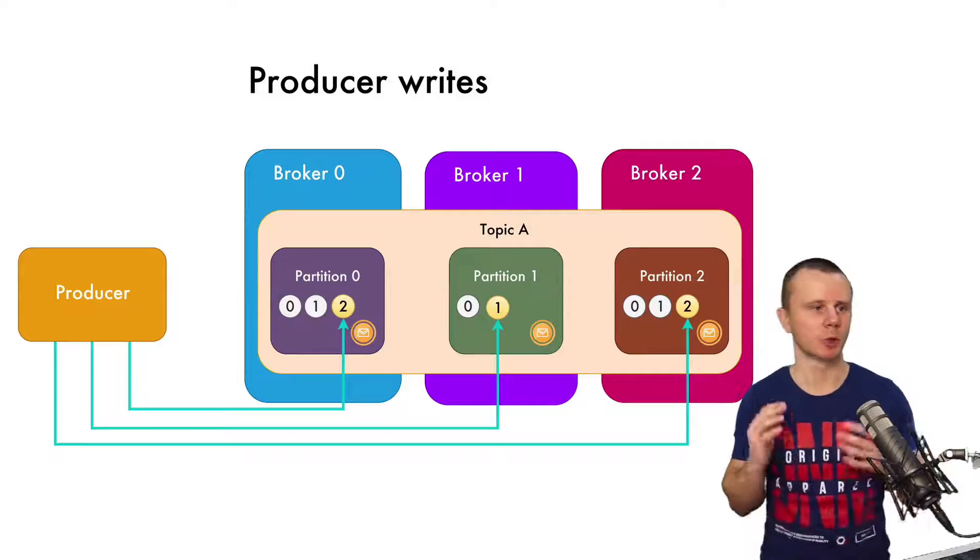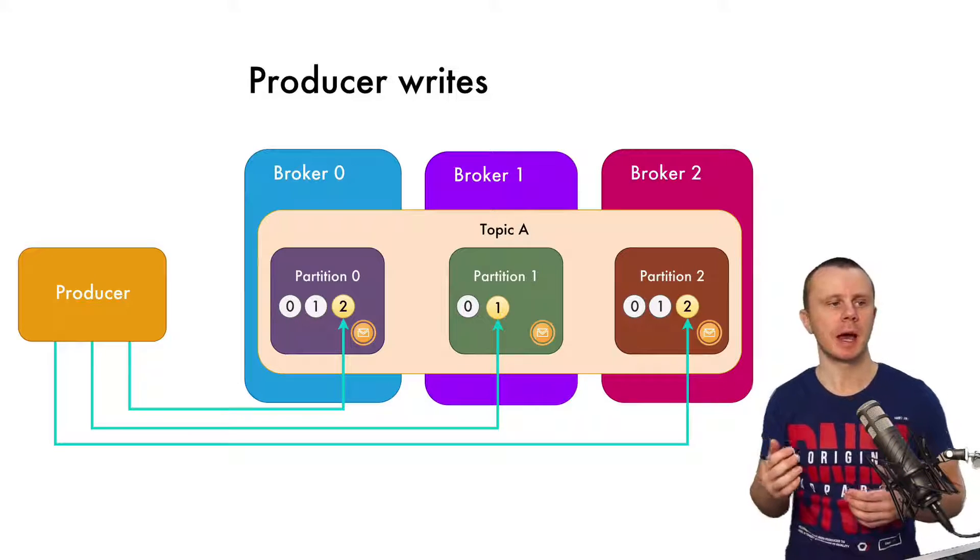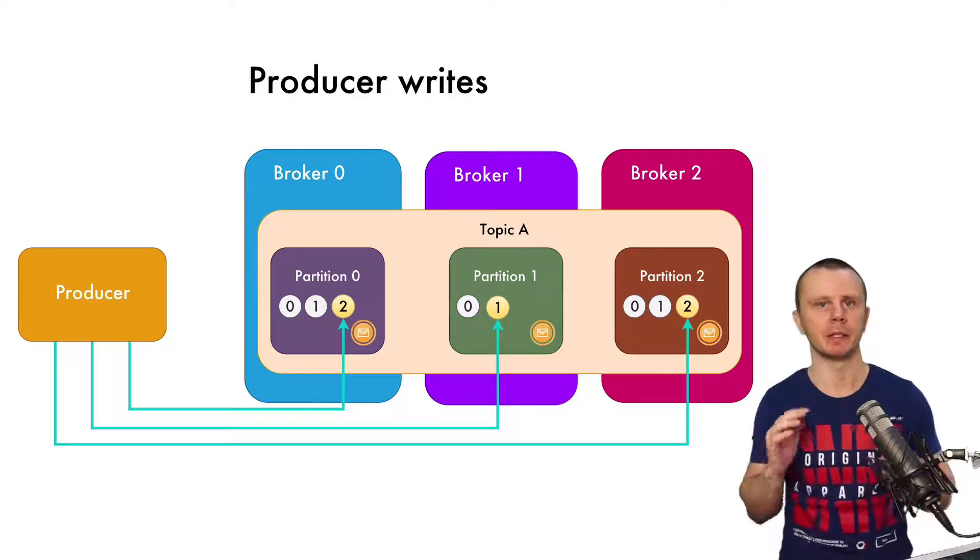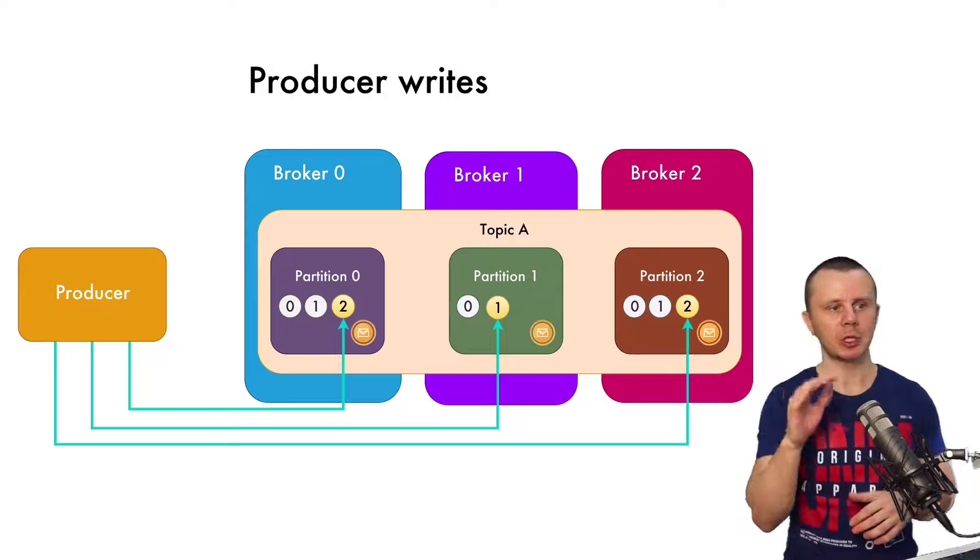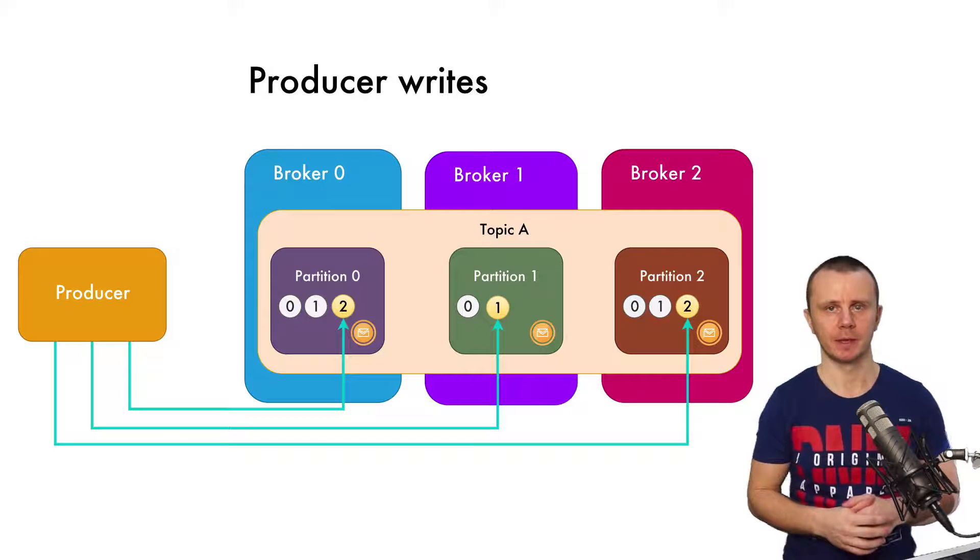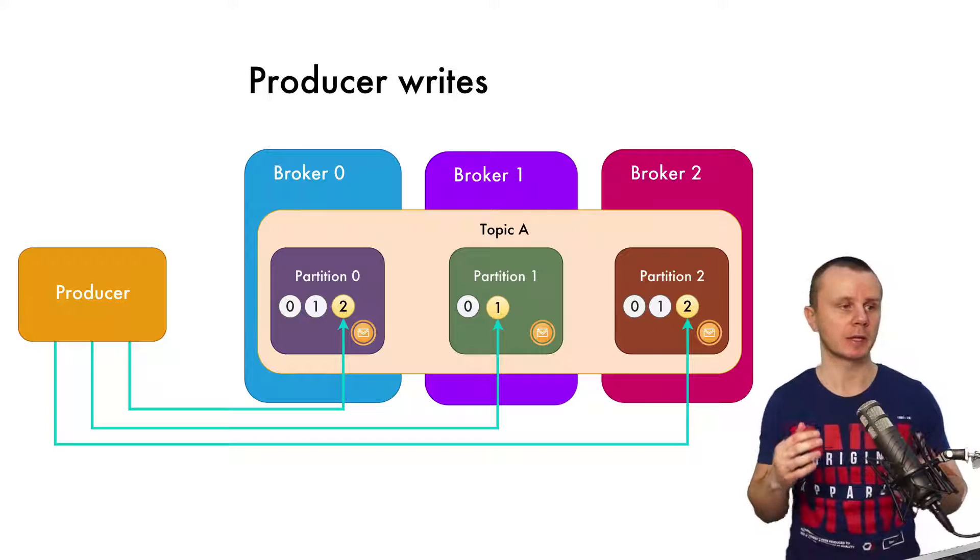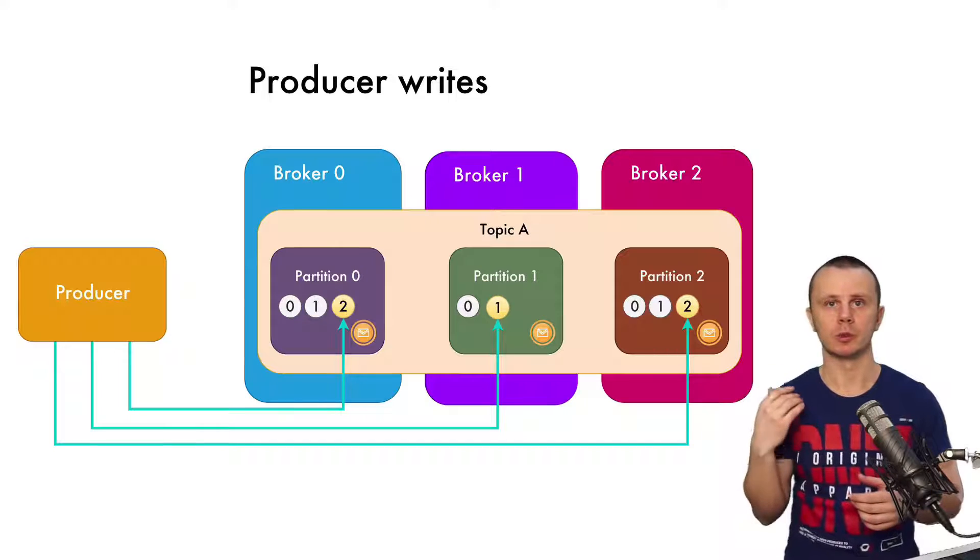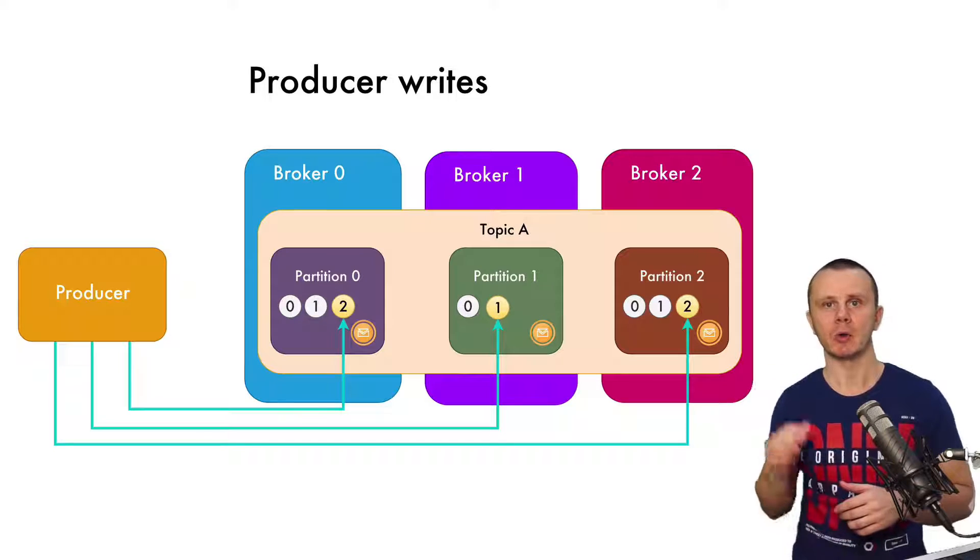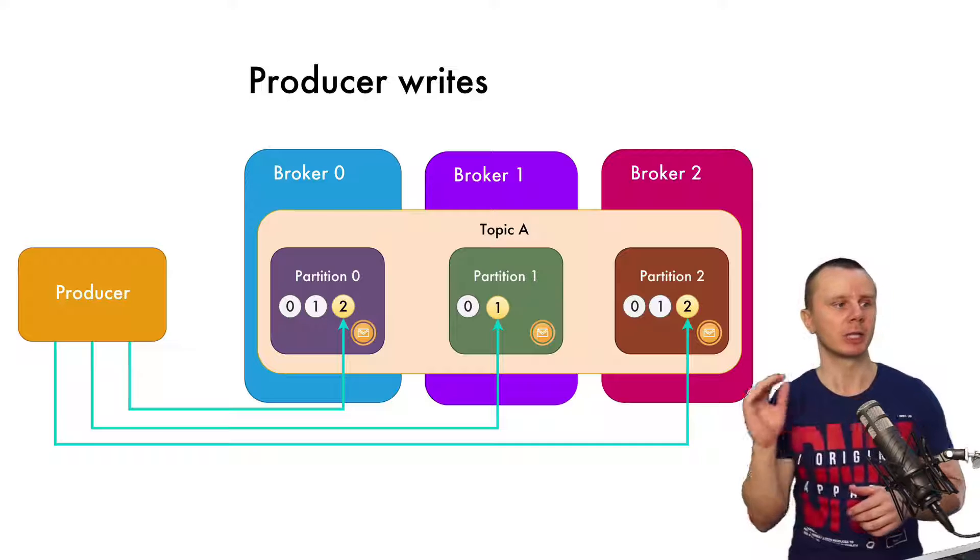Let's suppose that there is topic A with multiple partitions spread among different brokers, and every partition already has some messages. When a specific producer connects to the Kafka cluster and wants to produce messages, it can write messages to different partitions.